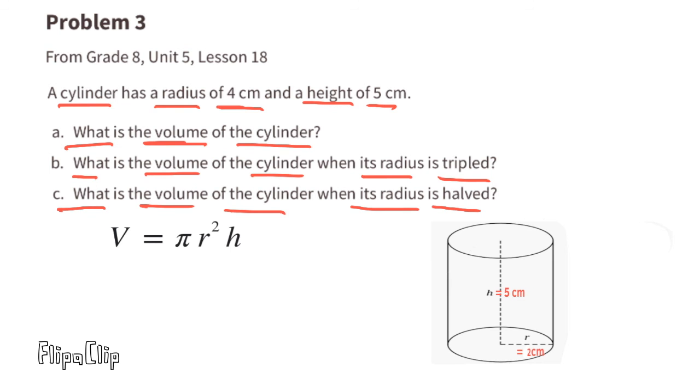Volume equals π times 2² times 5. 2 squared, or 2 times 2, is 4, and 4 times 5 is 20. So the volume of this cylinder would be 20π cm³.